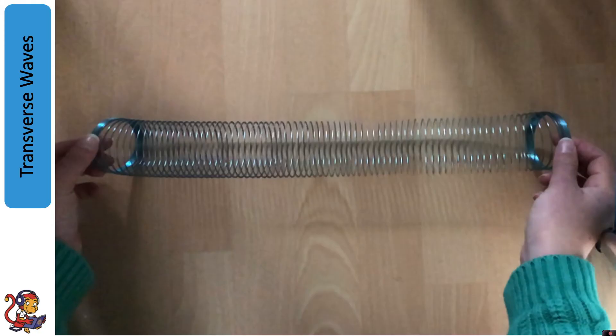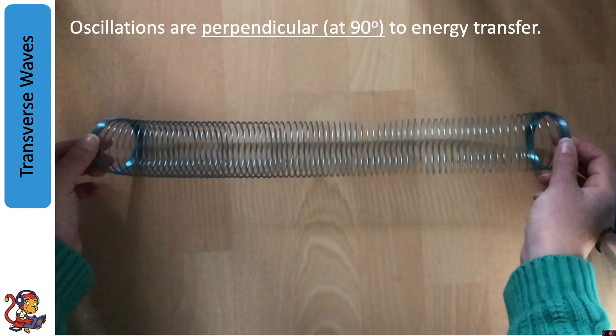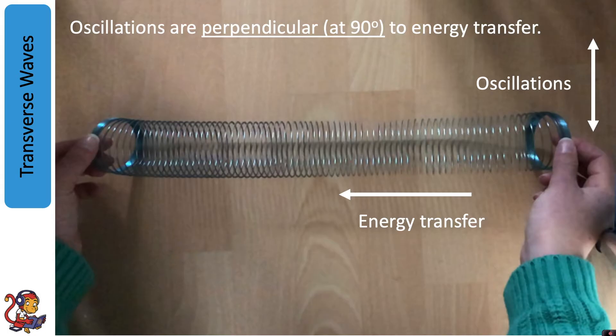So if I were to produce a transverse wave on this slinky we'd need to make sure our oscillations are perpendicular to the energy transfer. So this time you'll notice I will oscillate the slinky up and down but the energy transfer will still be from right to left.